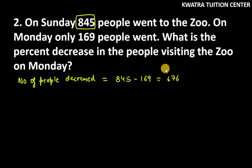So number of people decreased is what we have, that is 676. So percent decrease is what we have.